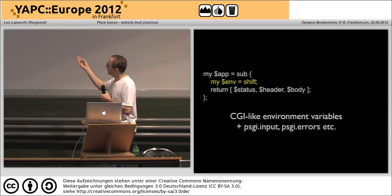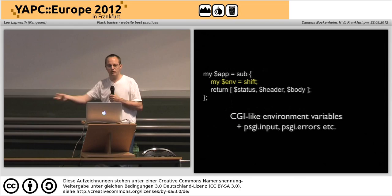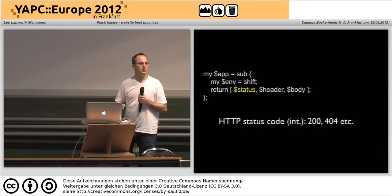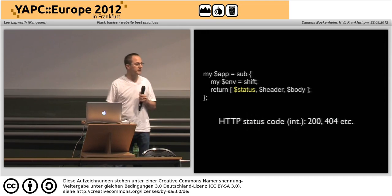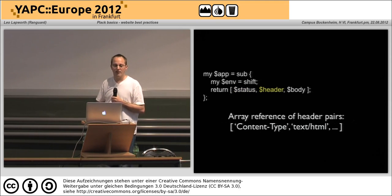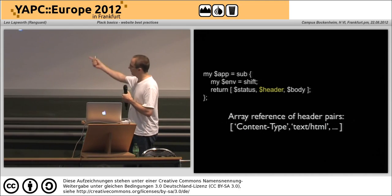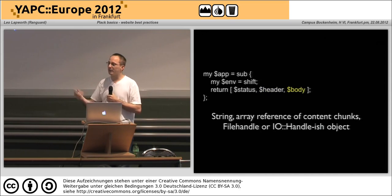The environment that comes in is your CGI-like environment variables — your inputs, your form parameters, all those sorts of things. Then what you have to do is return an array reference with three elements. The first is the status code: 200 for success, 302 for redirect, 404 not found, whatever it might be. Then you pass in an array reference of the headers you want to return — here we've got content-type text/html.